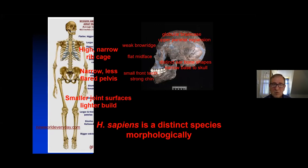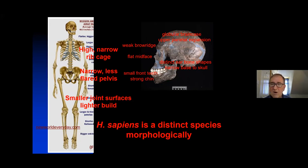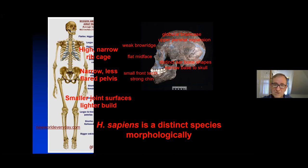When we strip down our morphology to the skeleton, we have a number of distinctive features compared with other groups in the fossil record. In our skeleton: a high and narrow rib cage, a narrow less-flared pelvis, generally smaller joint surfaces, a lighter build with lighter muscle markings. In the skull and jaw: a high and rounded brain case with upper parietal expansion, a weak or non-existent brow ridge, a flat mid-face, delicate cheekbones, distinct ear bone shapes, a narrow base to the skull, quite small front teeth, and quite a strong chin even in children. These are features we can look for in the fossil record to trace the origins of Homo sapiens.